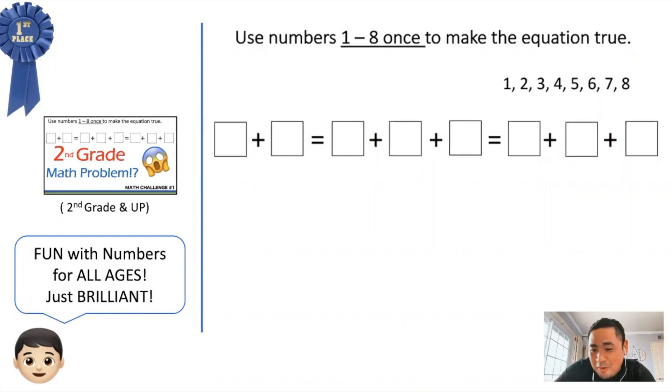And the gold medal or the blue ribbon goes to this second grade problem using numbers one through eight to get all three of the sums equal. It's such an awesome problem because if you love numbers and math, this is like the problem in my opinion.